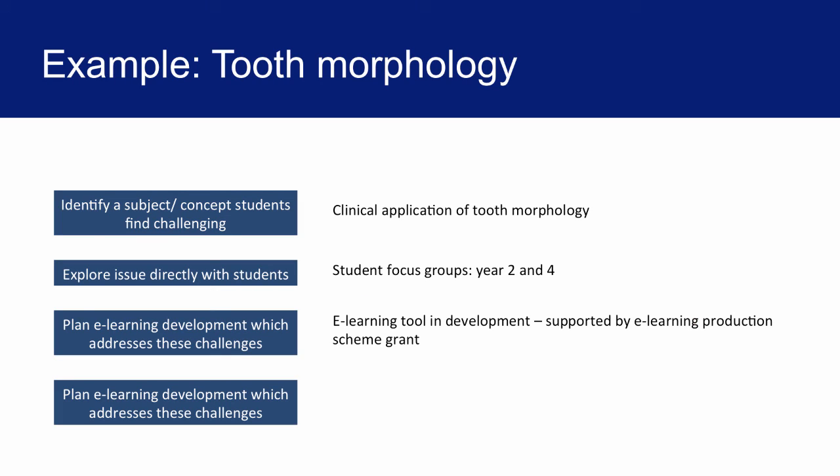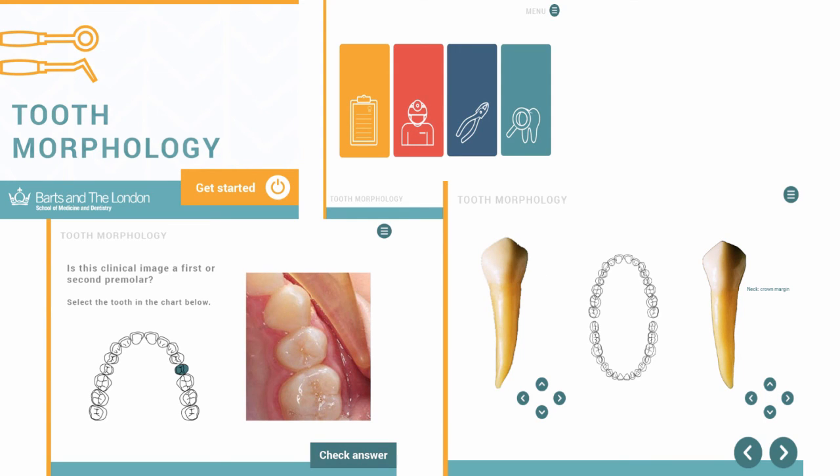We are going through this process at the moment as we work on developing a tooth morphology resource. Tooth morphology was identified by students and staff as an area of difficulty. We ran some student focus groups and from that decided on the format and design of the resource. We currently have students helping to create the resource, taking images and actually gathering the content. This project is being led by Swati and Ben with a grant from the e-learning production scheme.